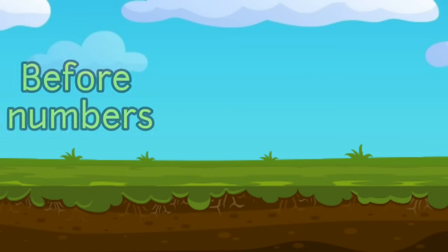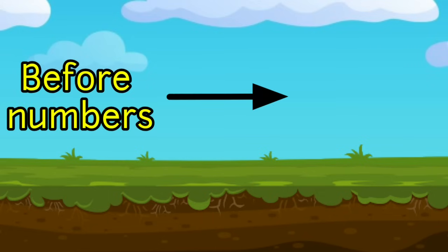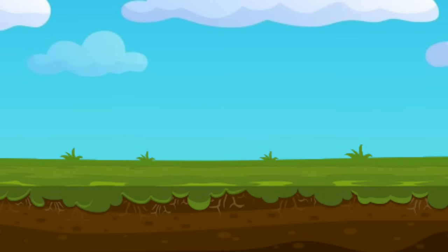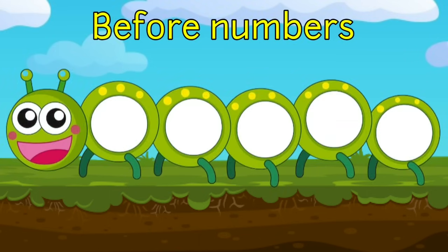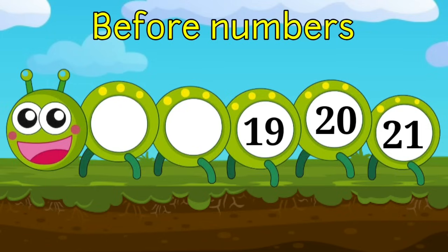Now let's do before numbers. Children, before numbers means backward counting from a given number. Now look at this caterpillar — let's count backward: 21, 20, 19, 18. Tell me, which number will come before 18? Before 18 is 17. Always remember, in before numbers the number always decreases and is smaller than the previous number.